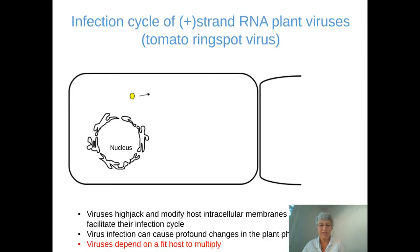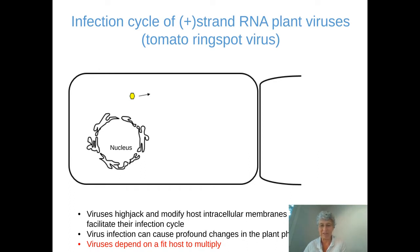But before I do that, I first wanted to give you a brief introduction of the infection cycle of positive-strand RNA plant viruses. And I'm going to take tomato ring spot virus as an example, because this is our favorite virus and that's the virus I'll be describing and using as a model system in the rest of the talk.